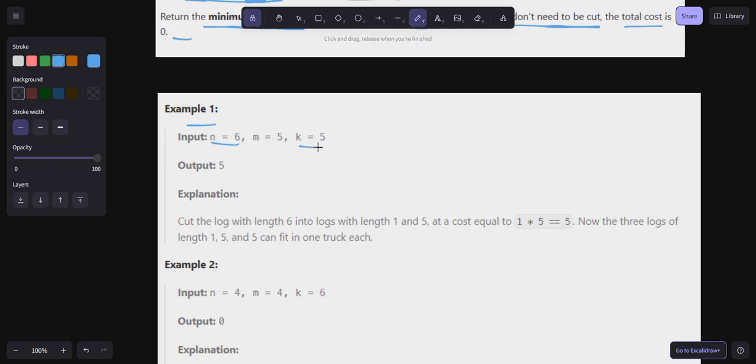N is equal to 6, k is equal to 5, and m is equal to 5. There are three trucks: truck 1, truck 2, and truck 3. Here, this m can go to truck 2. This is 6.